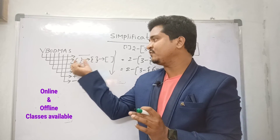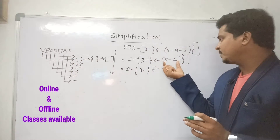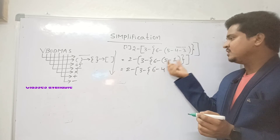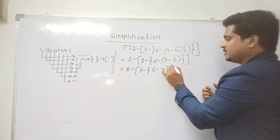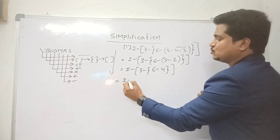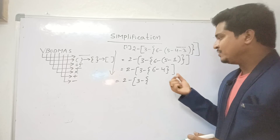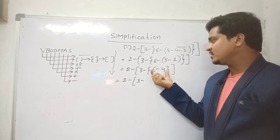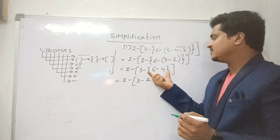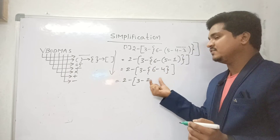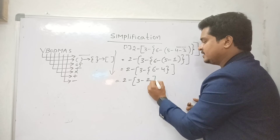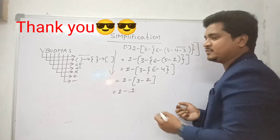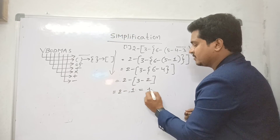After bar, simplify the open bracket first: 5 − 1 = 4. Eliminate the open bracket. Now: 2 − [3 − {6 − 4}]. Next simplify the curly bracket: 6 − 4 = 2. Eliminate curly bracket. Now: 2 − [3 − 2]. Next simplify the square bracket: 3 − 2 = 1. Eliminate square bracket. Finally: 2 − 1 = 1. The answer is 1.